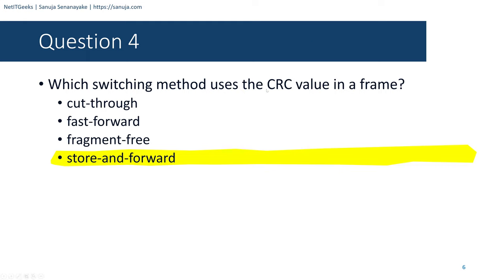Question number twenty: What OSI physical layer term describes the measure of the transfer of bits across a medium over a given period of time? Options are throughput, bandwidth, latency, and goodput. You don't need to know the entire OSI layer stack to answer this. The answer is throughput — the best term to describe the measure of the transfer of bits across a medium.